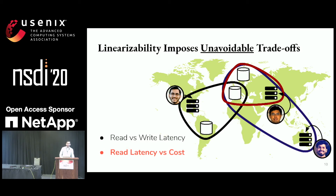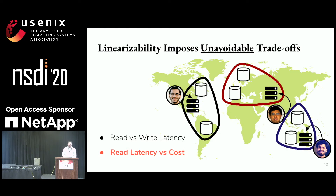We can improve read latency by introducing additional sites. The benefit is that now everyone can talk to a read quorum that's close by and have low latency, but the problem is we've significantly increased the number of sites — we've actually doubled them.